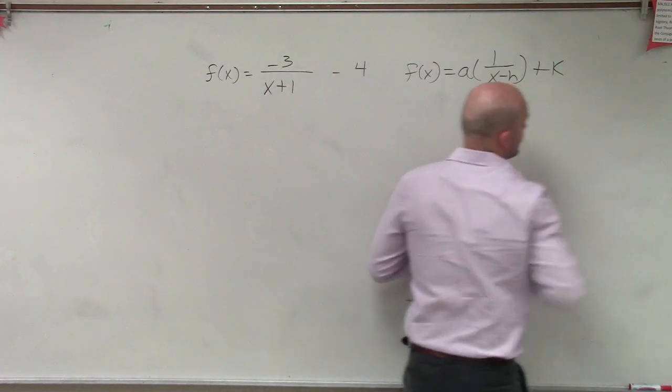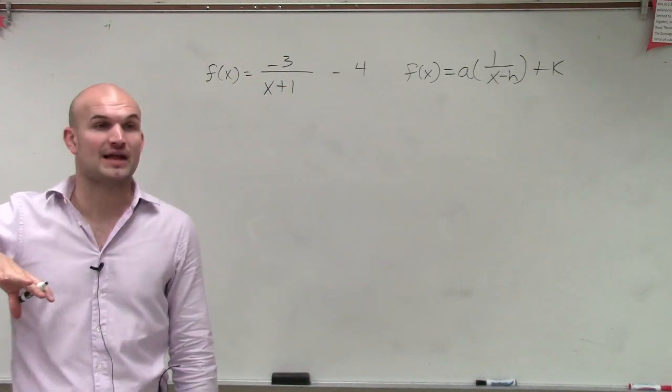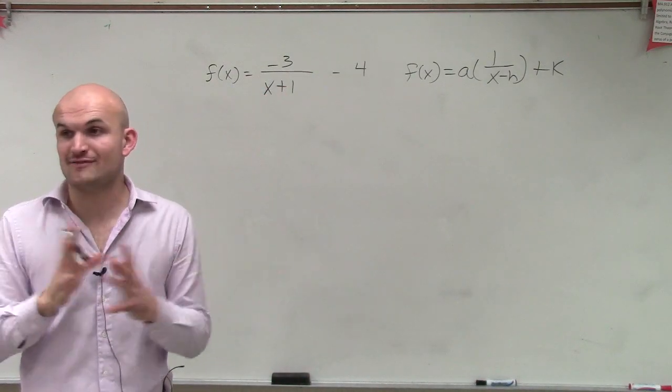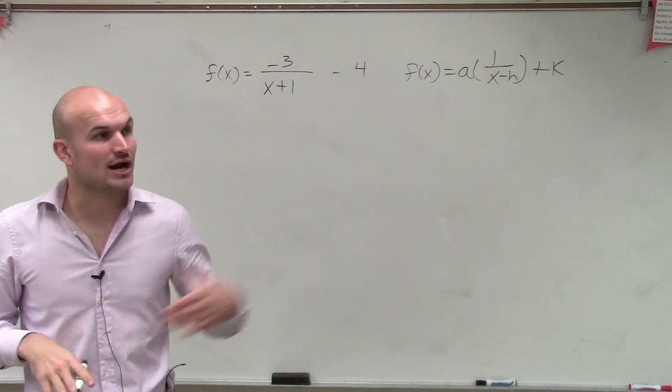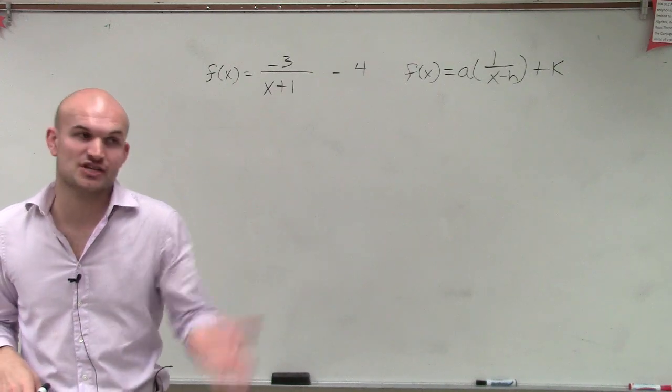Remember, I told you guys the general transformation form we had was a times 1 over x minus h plus k. And remember, when going back to transformations, a tells us if there's going to be a reflection, and if we're going to have a stretch or a compression, and our h shifts it left and right, and k shifts it up and down.